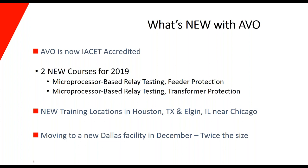Before we get started with the webinar, I just want to go over a few things that are new at AVO. As of May 1st of this year, AVO received IASET accreditation. IASET stands for International Association for Continuing Education and Training, and they basically developed the original Continuing Education Unit, or CEU. This means our company has gained a major competitive advantage by demonstrating our commitment to best practices and professional training through mastering their rigorous accreditation program. It's proof that the training you receive at AVO is of the highest quality, and that CEUs are transferable between cooperating organizations.